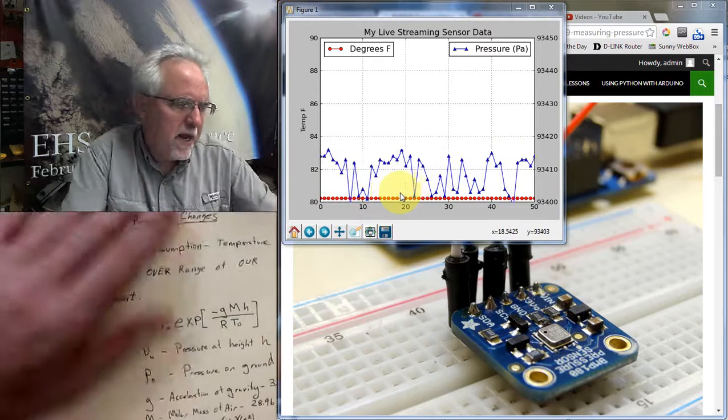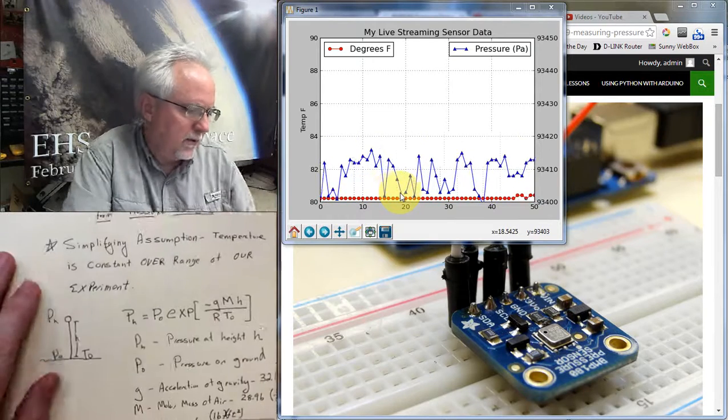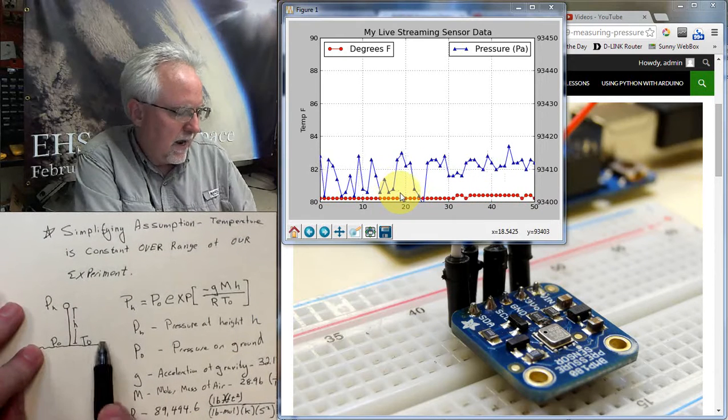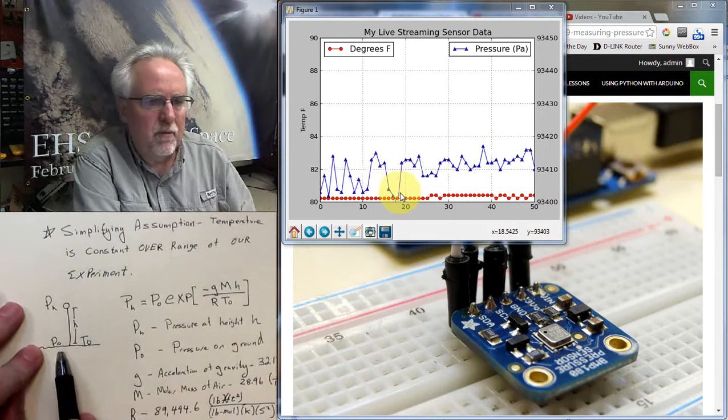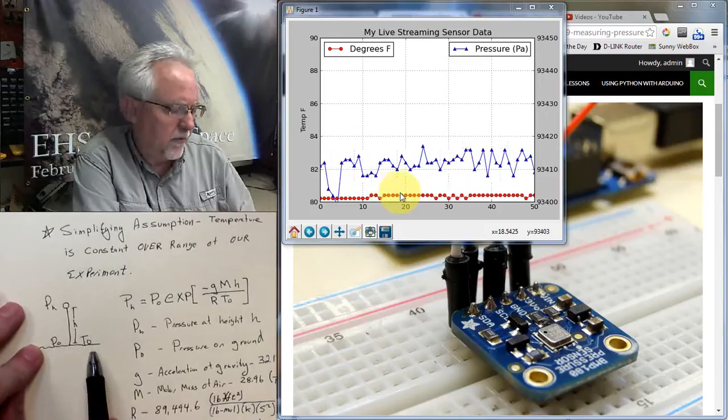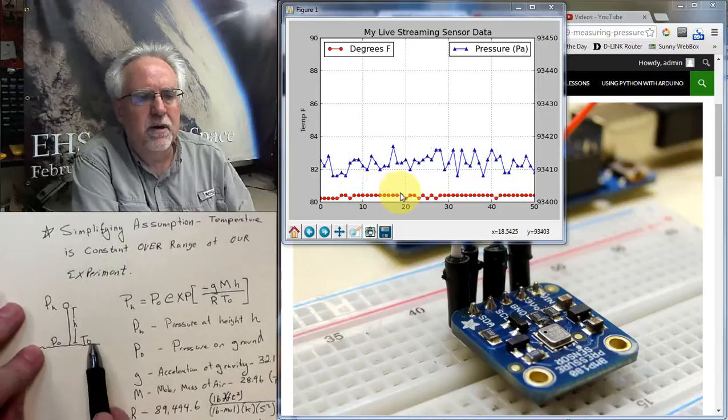And so here's kind of the parameters, and here's how we're going to look at it. We're going to have the ground here, and there's a pressure on the ground, and that we're going to call P0, and there's also a temperature on the ground, and that temperature we're going to call T0.